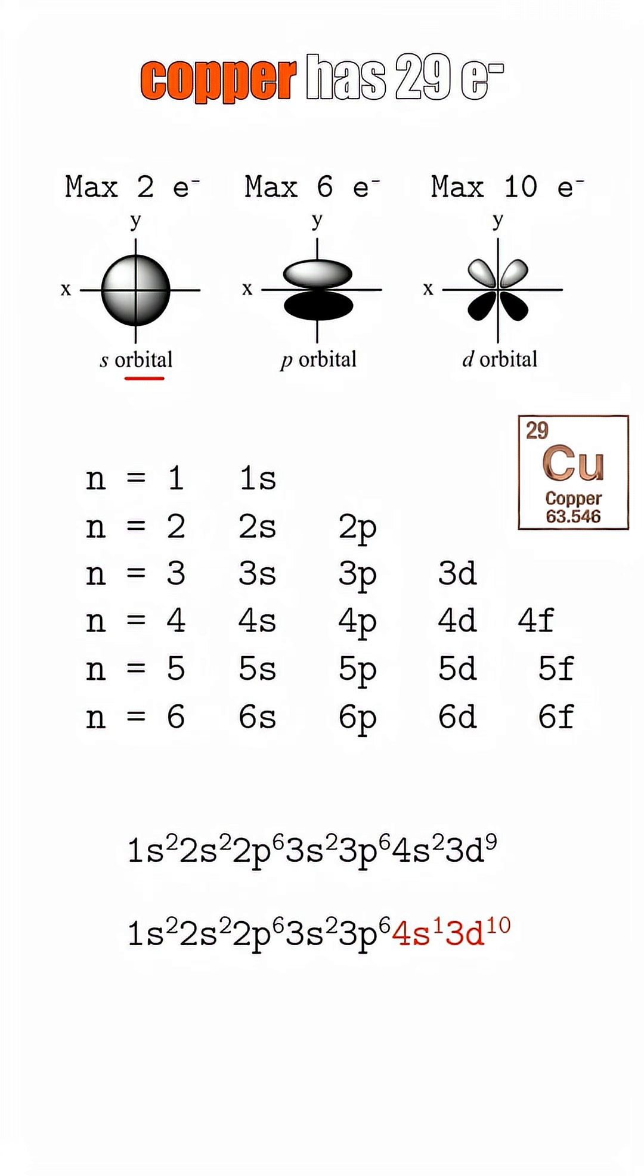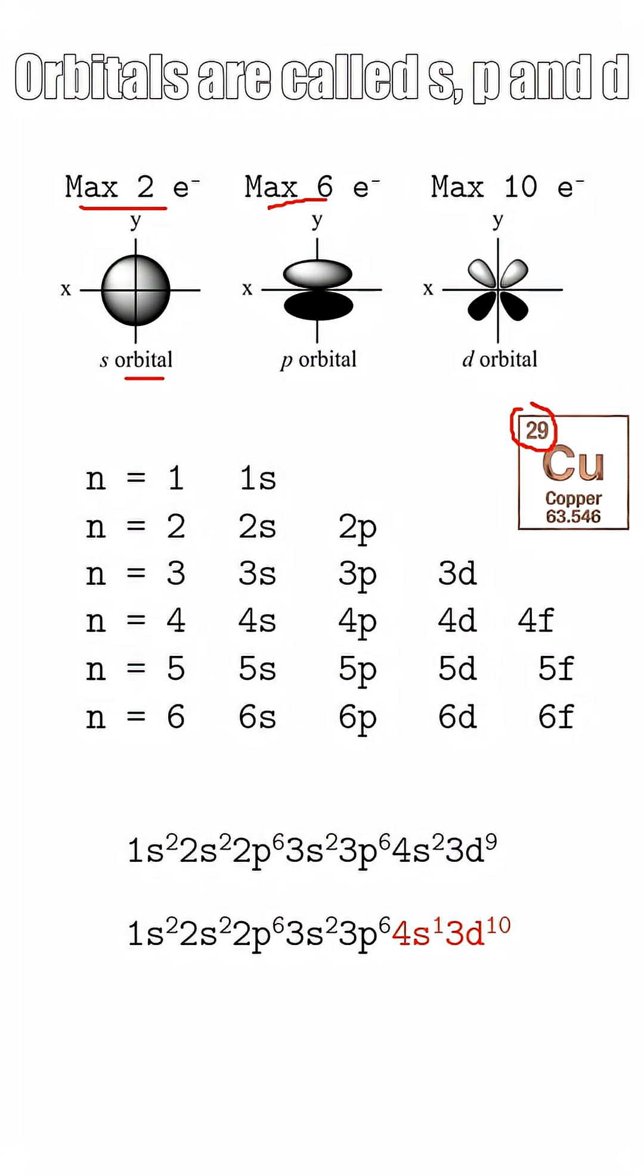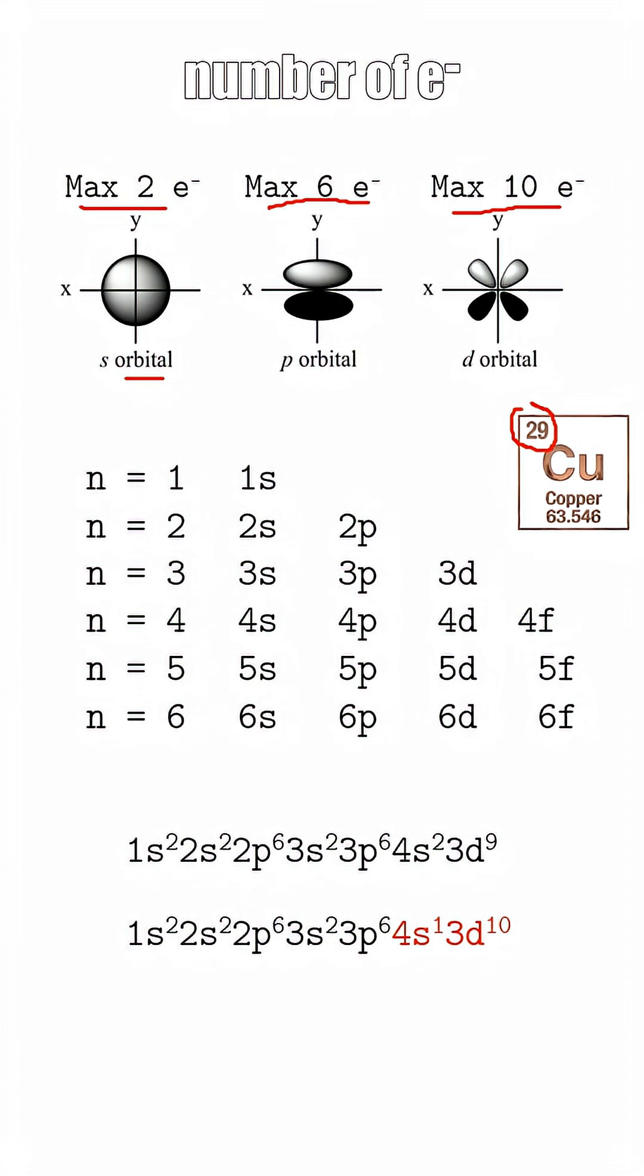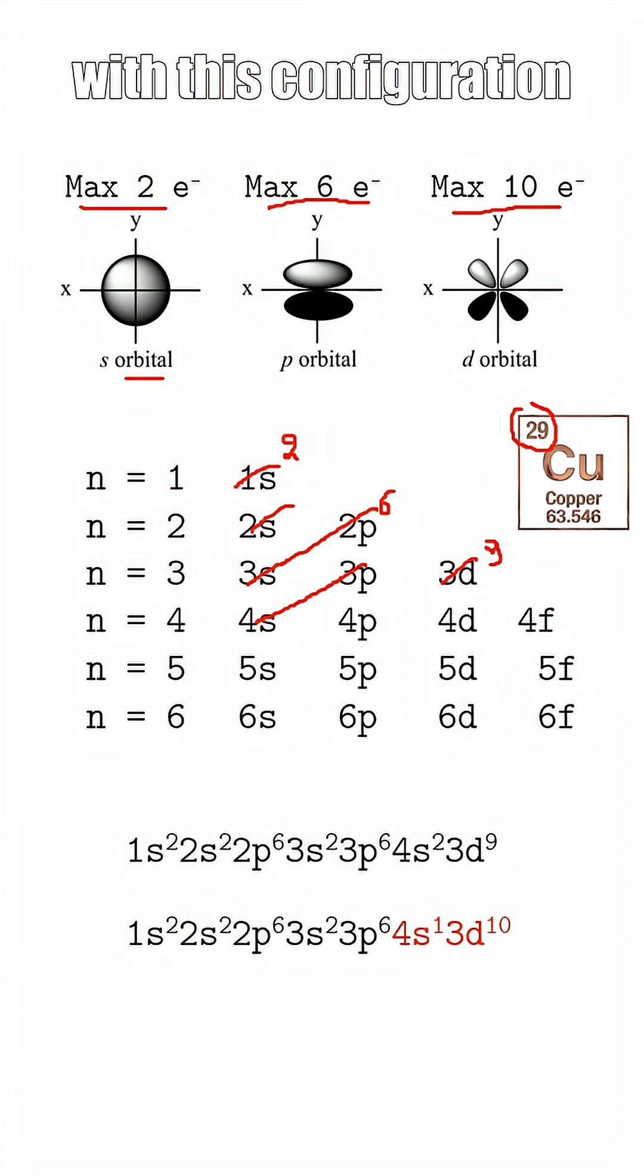Copper has 29 electrons that you have to place inside these orbitals. Orbitals are called S, P, and D, and they have a maximum number of electrons. Filling the orbitals, you should end up with this configuration.